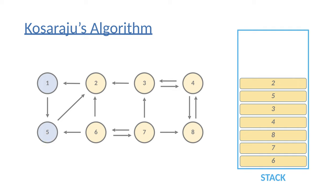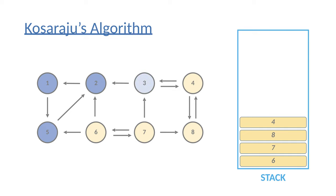From vertex one in the transpose graph, we can visit vertex five and vertex two — these vertices form the first strongly connected component. Then we keep popping items from the stack. Vertex two has already been visited, so we skip it. Vertex five has already been visited, so we skip it. We reach vertex three — we start with vertex three, do a standard depth-first search, visit vertex four and vertex eight. These vertices form the second strongly connected component.